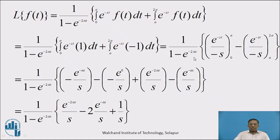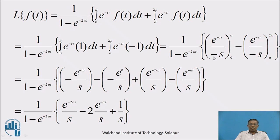Which is equal to 1 upon (1 minus e raised to minus 2as) into bracket: integration of e raised to minus st with respect to t is e raised to minus st upon minus s, with limit 0 to a; minus integration of e raised to minus st, which is e raised to minus st upon minus s, with limit a to 2a. Substituting the limits: when t = a, we get minus e raised to minus as upon s; when t = 0, minus e raised to 0 upon s; and from the second part: when t = 2a, we get e raised to minus 2as upon s; when t = a, we get e raised to minus as upon s.